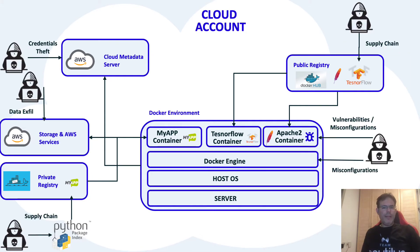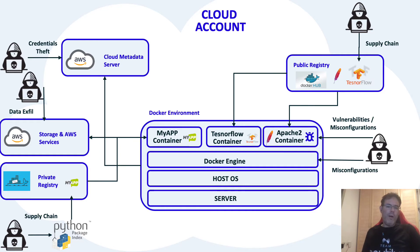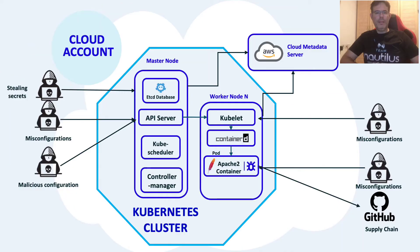Now let's talk about the attack surface. My application, the Docker software, and the underlying host can all have vulnerabilities or misconfigurations that attackers can exploit to do a lot of damage. They can scan my application for vulnerabilities and exploit them, look for misconfigurations in the Docker software — such as a Docker daemon that is open to the world and can receive commands from an anonymous user. They can try stealing my AWS credentials before or after exploitation, and they can try poisoning a public registry or public code repository such as Python in order to hide malicious code within my application.